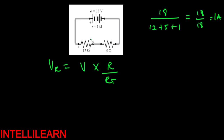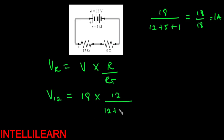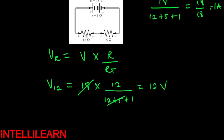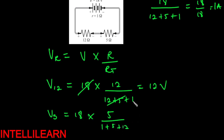Let's try it out. The voltage of the 12 ohm resistor will be: total voltage 18, multiplied by 12 over the total resistance 12 plus 5 plus 1, which gives us 12 volts. We can do the same for the 5 ohm: 18 multiplied by 5 over 1 plus 5 plus 12, which also gives us 5 volts. So what you are doing is taking the total voltage multiplied by the fraction of that particular resistor out of all the resistors.